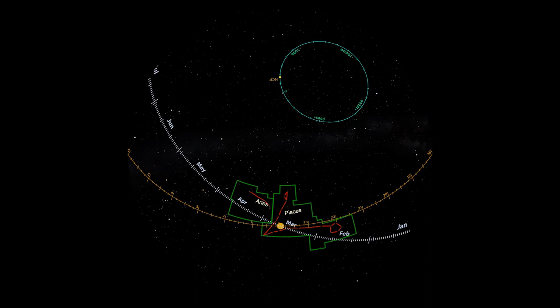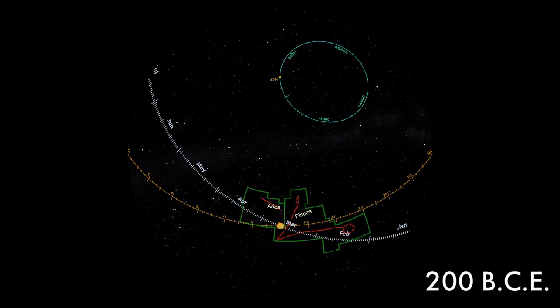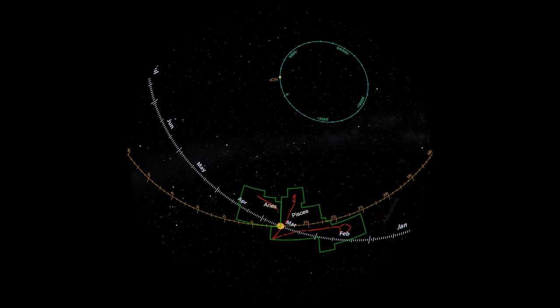But astronomy is an endeavor that spans the generations, the result of thousands of years of careful study. This point in the sky was identified some 2,000 years ago. Back then, taking into account the wobble of the Earth, it would have appeared just at the extreme edge of Aries. And in the intervening time, it's exited Aries into Pisces. In some sense, this is the age of Pisces.